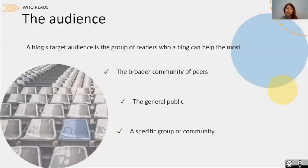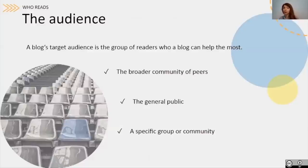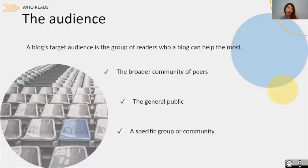After thinking about the aim, the topic, and when and where you want to publish, something important to keep in mind is: who do you want your blog to be read by? Who can you help the most with what you want to write? That is your target audience. It could be the broader community of peers, if you want to blog about your main research topic or something very specific of interest to your community, or the general public, if you want to blog about science in general or basic principles you'd like to explain. Or why not a specific group or community? For example, if an earthquake happens in a specific region and you are a seismologist, you may want to explain what happened and the basics of earthquake hazard to exactly that community in that region.